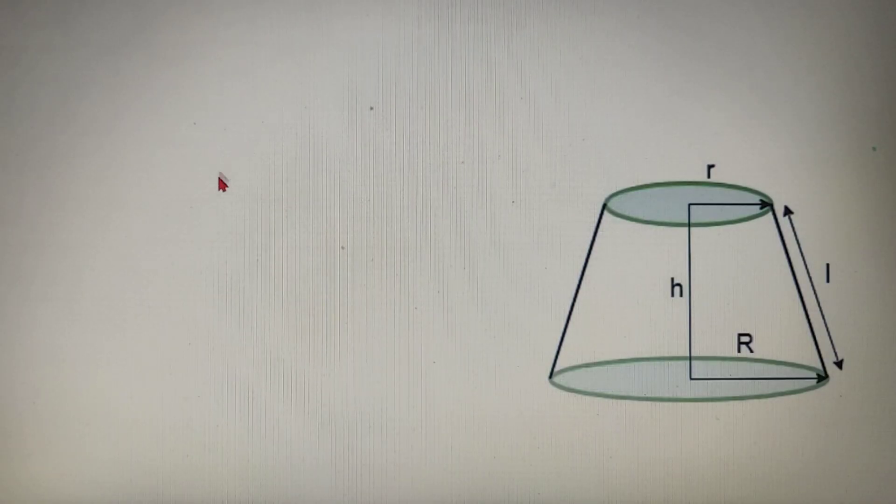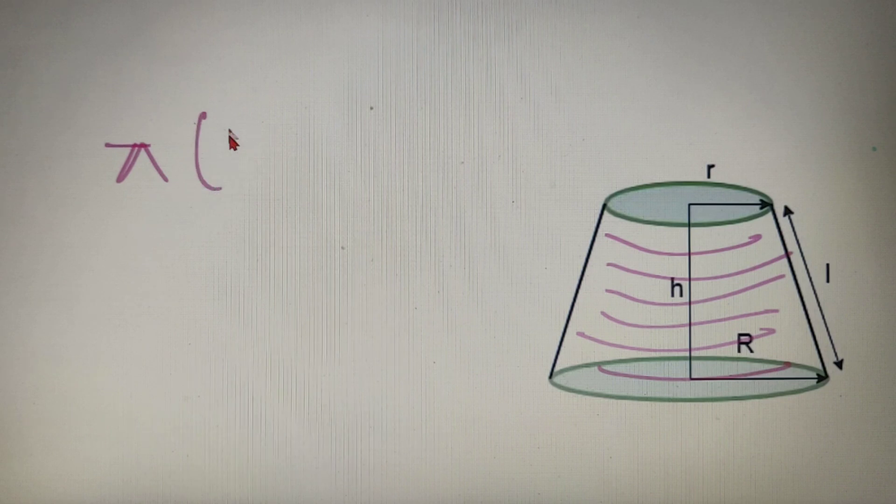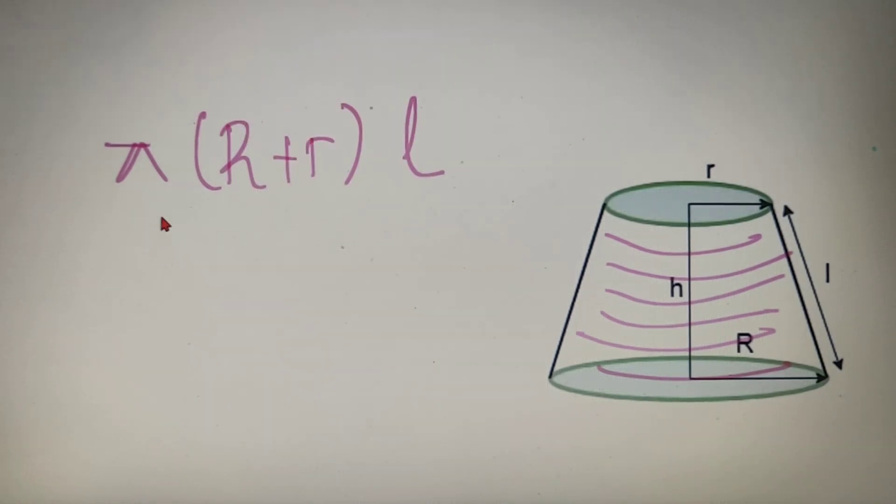Now curved surface area of a figure is nothing but the area of its curved surface. So over here we can see that this area shaded in pink is the curved surface area of this frustum. So the value of the curved surface area of a frustum is equal to pi times capital R plus small r into L. So the product of these three terms will give us the value of the curved surface area of the frustum and it is generally represented by CSA.